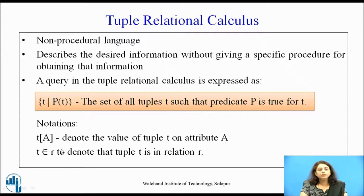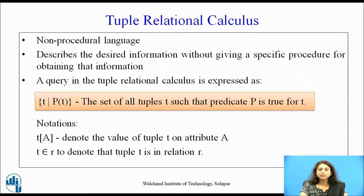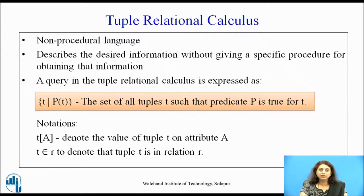We will be using these notations: t[a] denotes the tuple t on attribute a, meaning the value of attribute a in that particular tuple. And t ∈ r means that tuple t exists in the relation r.